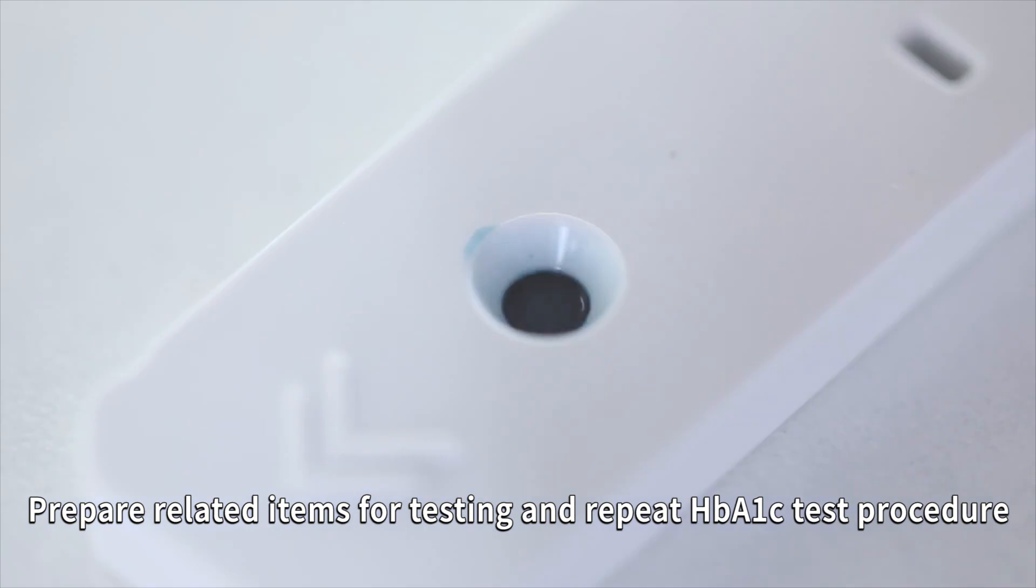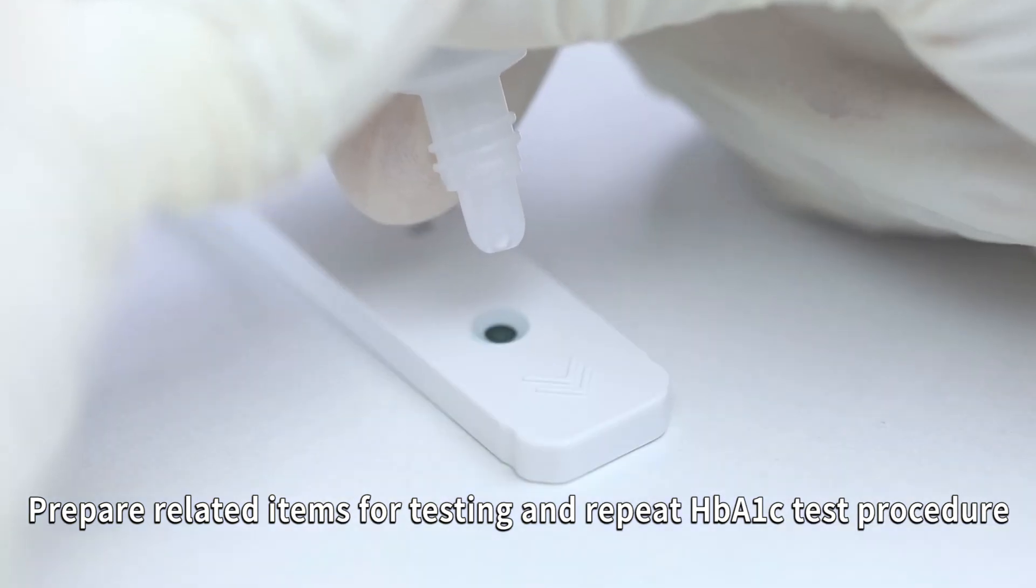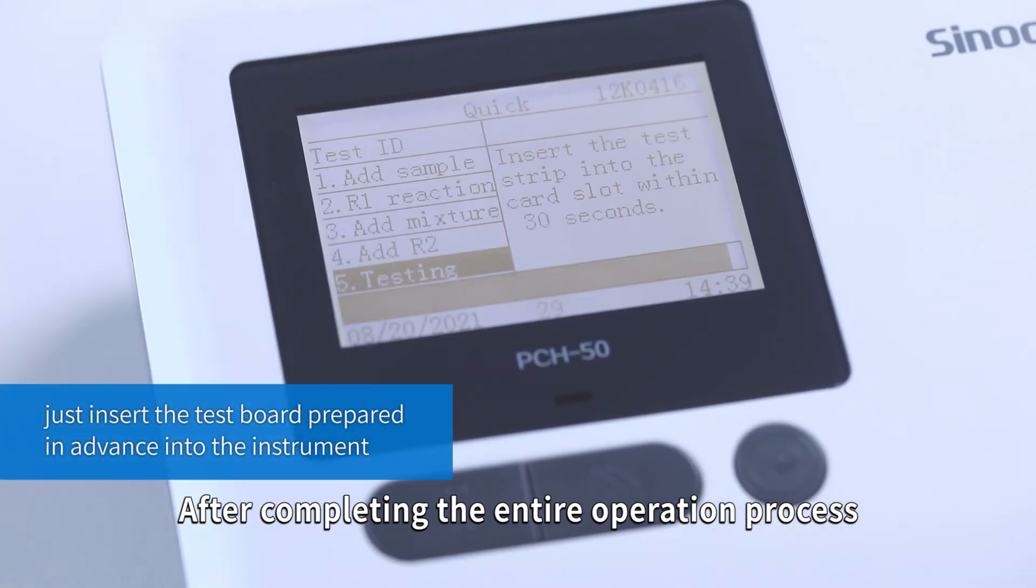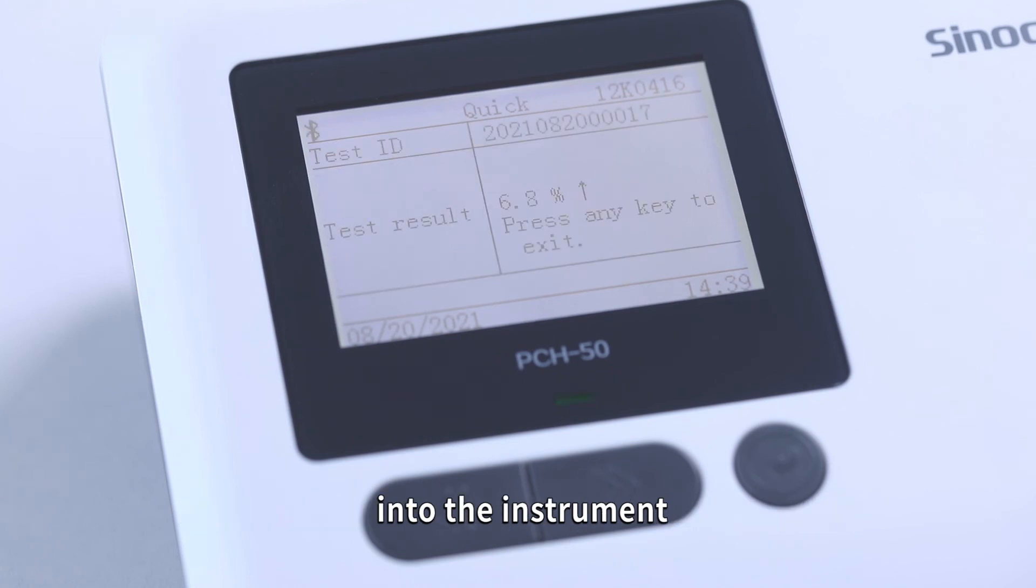Prepare related items for testing, and repeat HbA1c test procedure. After completing the entire operation process, click on the Quick Test and put the test board into the instrument.